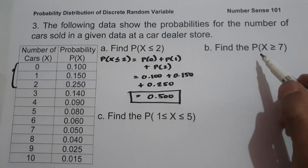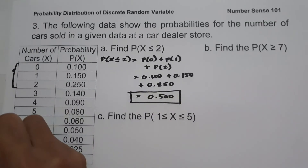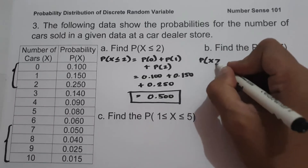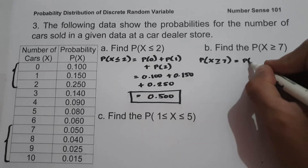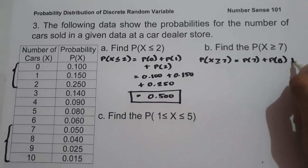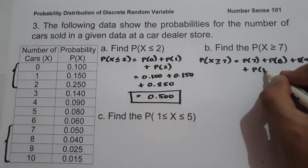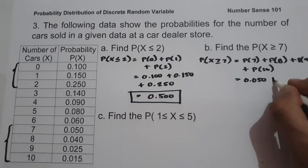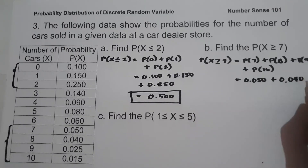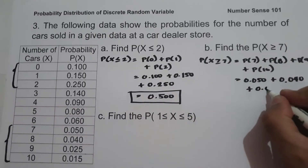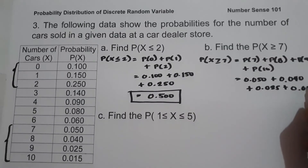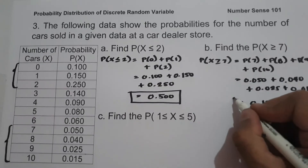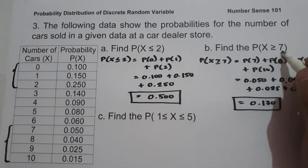On letter B, find the probability if X is greater than or equal to 7. So P(X ≥ 7) equals P(7) + P(8) + P(9) + P(10), which is 0.050 + 0.040 + 0.025 + 0.015, giving us 0.130.